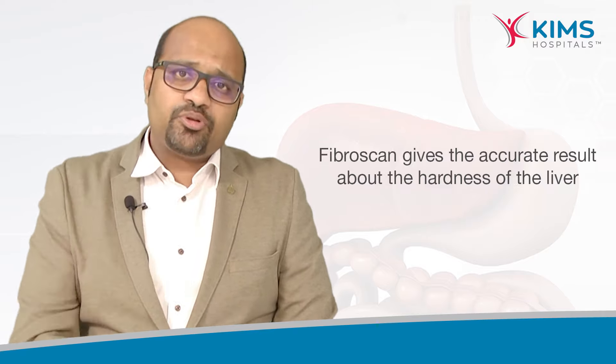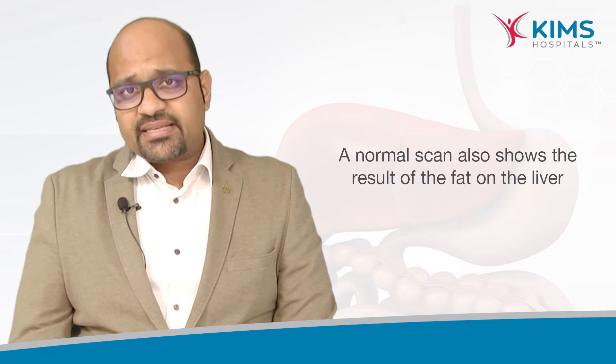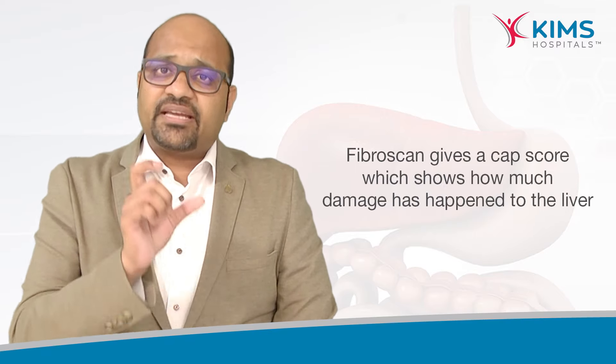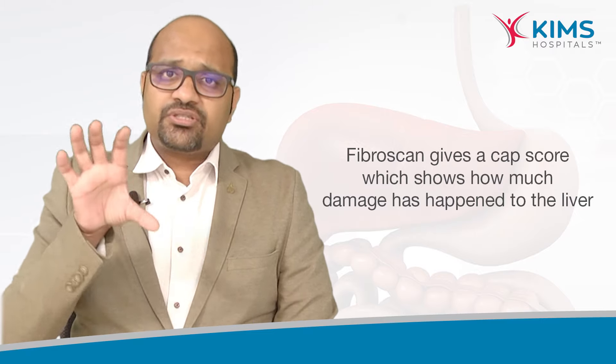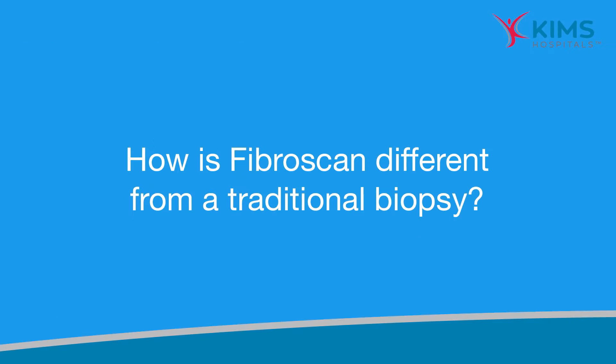Ultrasound tells you the liver size, texture, and whether the surface is normal or nodular or irregular, but it does not tell us the stiffness — how hard the liver has become. Fibroscan essentially tells us that factor: how hard the liver has become, which is fibrosis. A scan can also tell us if there is fat in the liver. Fatty liver is a very common finding, whereas fibroscan gives a CAP score which tells us the damage that fat is causing to the liver — an indirect index of how much fat is present and how much damage it is causing.